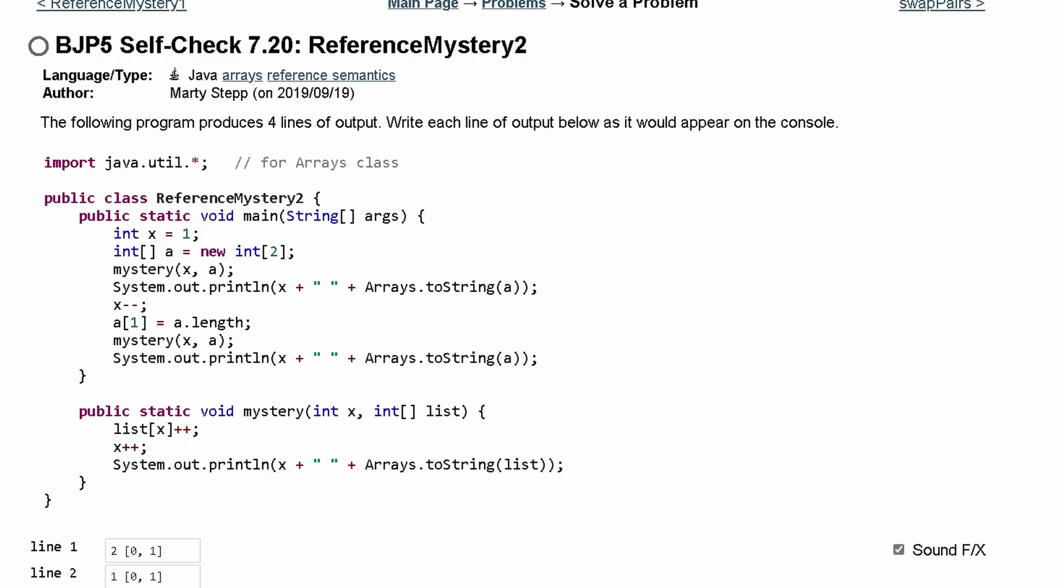So let's come into here. Before we do anything, at this line, x is 0. And then our a1, which is this one right here, is equal to the length, which is 2.